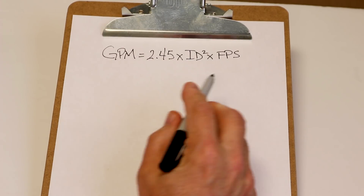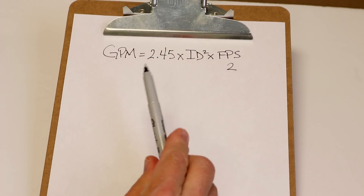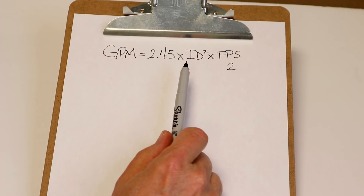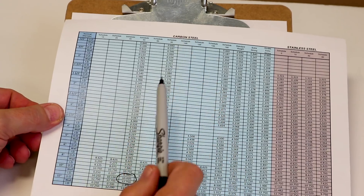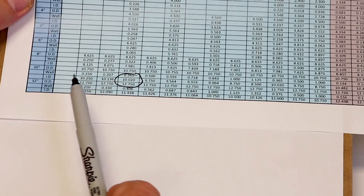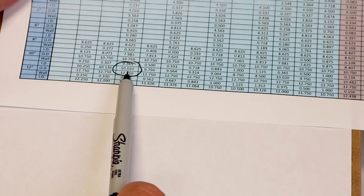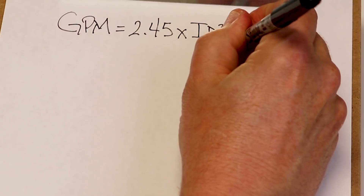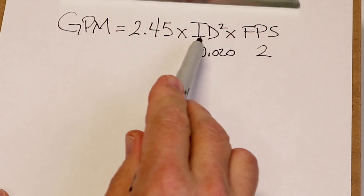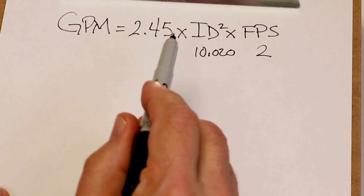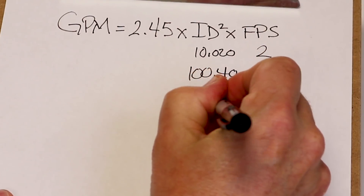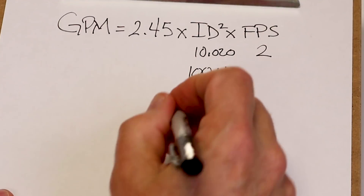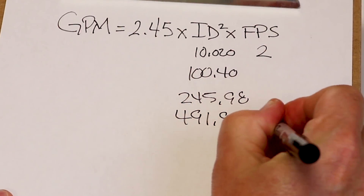What do we know? We know the feet per second is 2, and we have a 10-inch pipe. But for better accuracy, we should use the correct pipe ID. I have here an ANSI pipe chart for carbon steel, and for a 10-inch pipe at schedule 40, the ID is 10.020. So: 10.020 squared is 100.40, times 2.45 is 245.98, times 2 feet per second equals 491.96 gallons per minute.